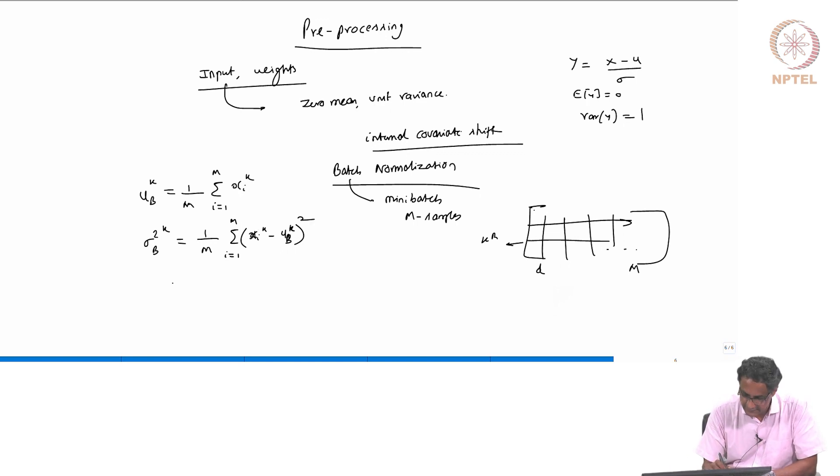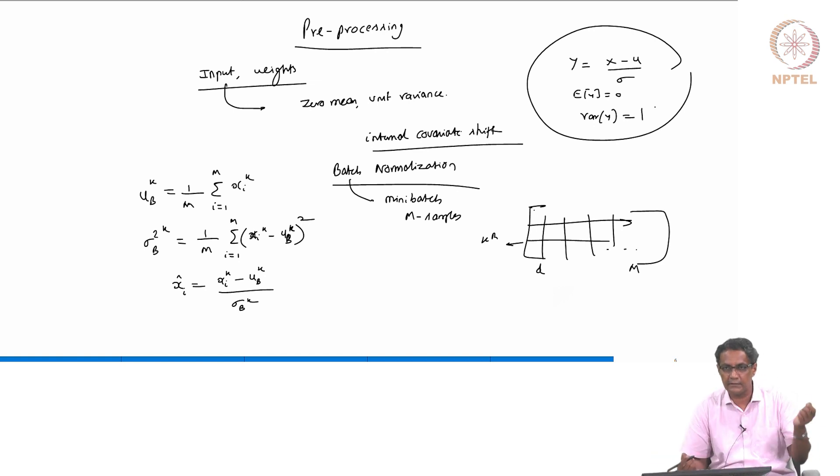And then you do a normalization which is what we did here, same way, you do x_ik minus mu_b_k by sigma_b_k, exactly as we do that, except that now we are doing it for every element.